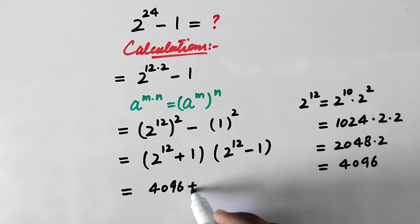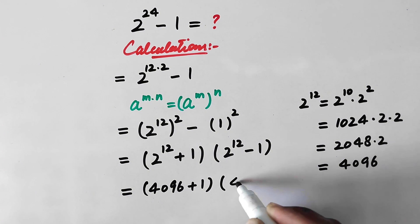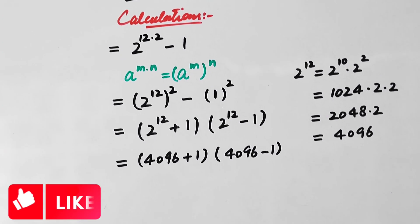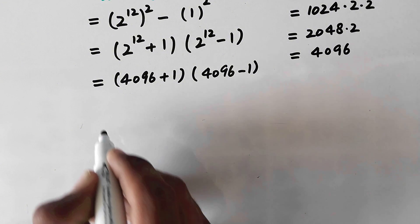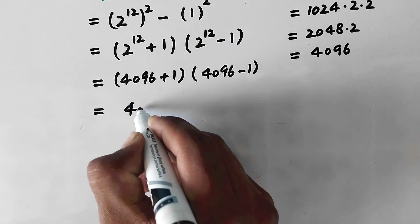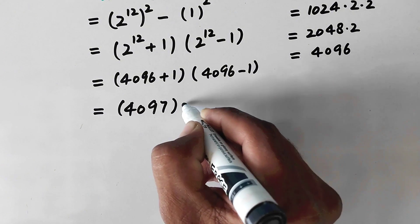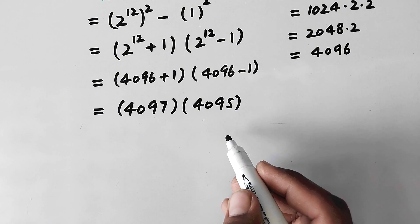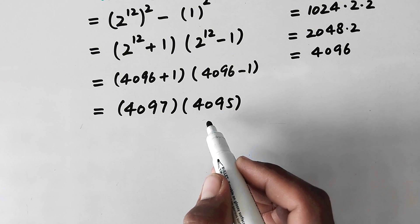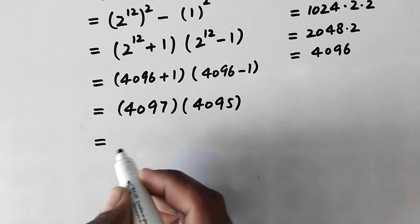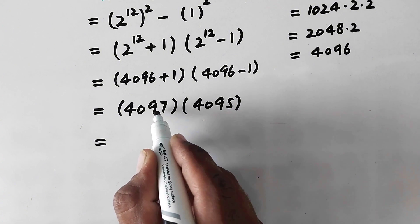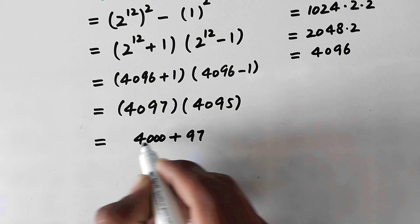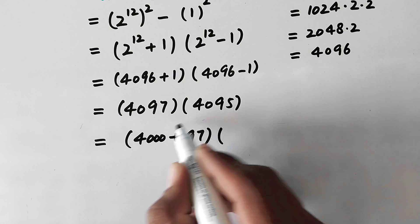We now substitute 2 to the power 12 equal to 4096, giving us 4096 plus 1, times 4096 minus 1. That becomes 4097 times 4095. To simplify this multiplication we will separate both values.